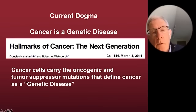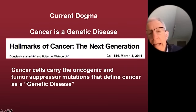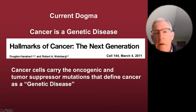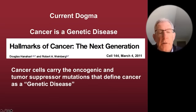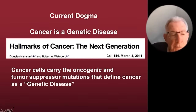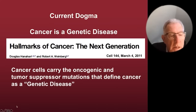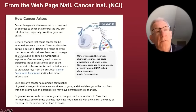Right now, the current dogma is that cancer is a genetic disease. The paper by Hanahan and Weinberg is the most highly cited paper in all of biological literature — over 75,000 citations. Cancer cells carry the oncogenic and tumor suppressor mutations that define cancer as a genetic disease. This is what is discussed in freshman biology, medical school — there is no discussion of alternative theories. It is also supported by the National Cancer Institute.